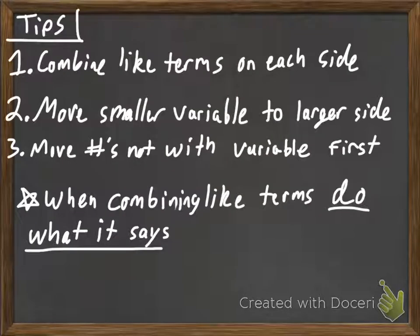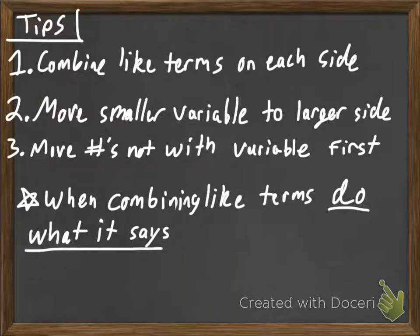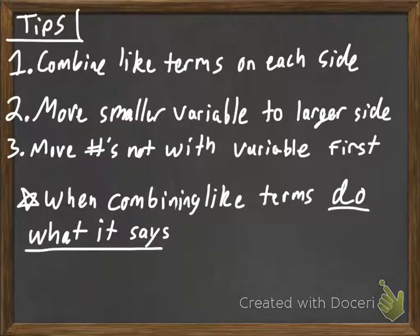Some tips to start with. First tip is to always combine like terms on each side, and you need to do that first. You want to clear up the left side and the right side of your equation before you actually start moving things from the left to the right, or the right to the left. We want to combine the like terms.